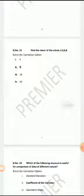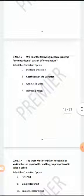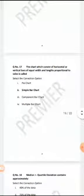Find the mean of the values 2, 4, 6, 8. The correct answer is 5. Which of the following measure is useful for comparison of data of different nature? The correct answer is coefficient of variation is useful for comparison of data of different nature.